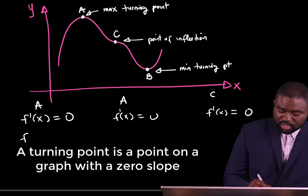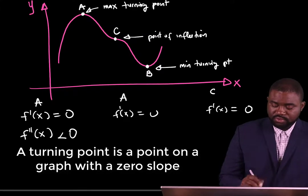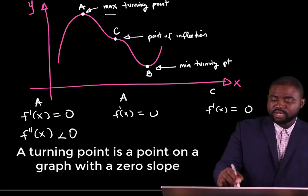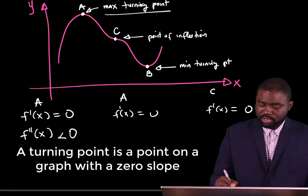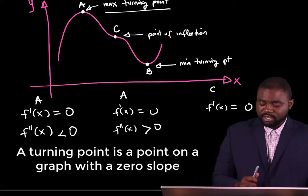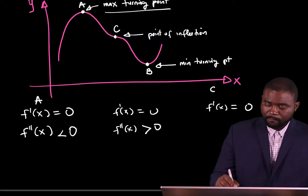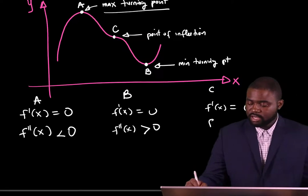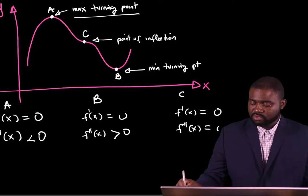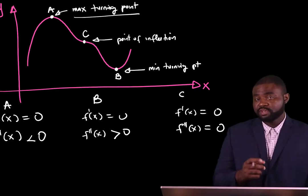If the second derivative of the curve at a point is less than 0, then it means that point is a maximum turning point. On the other hand, if the second derivative is greater than 0, it means the point is a minimum turning point. And if the second derivative is equal to 0 at that particular point, it is a point of inflection.